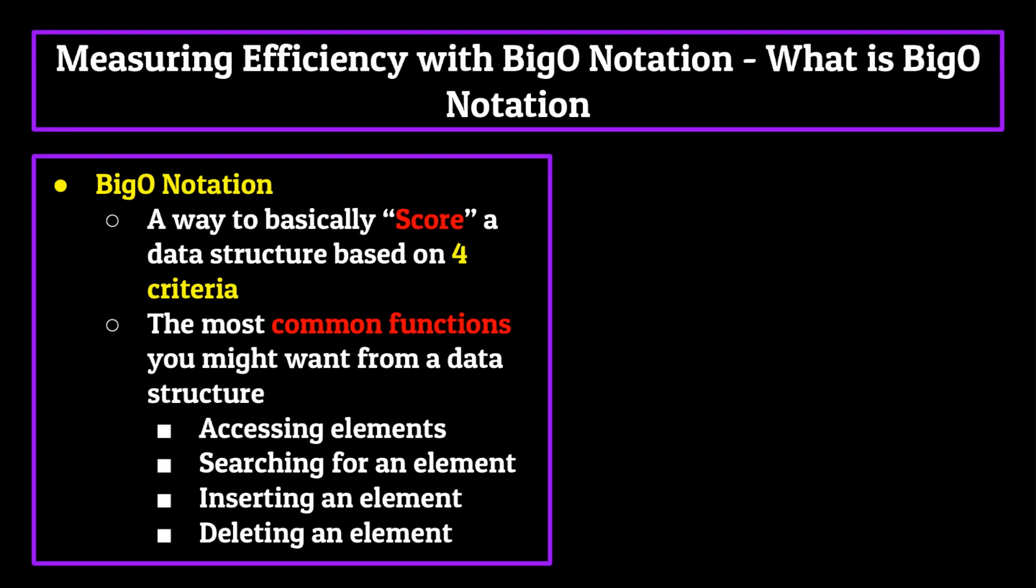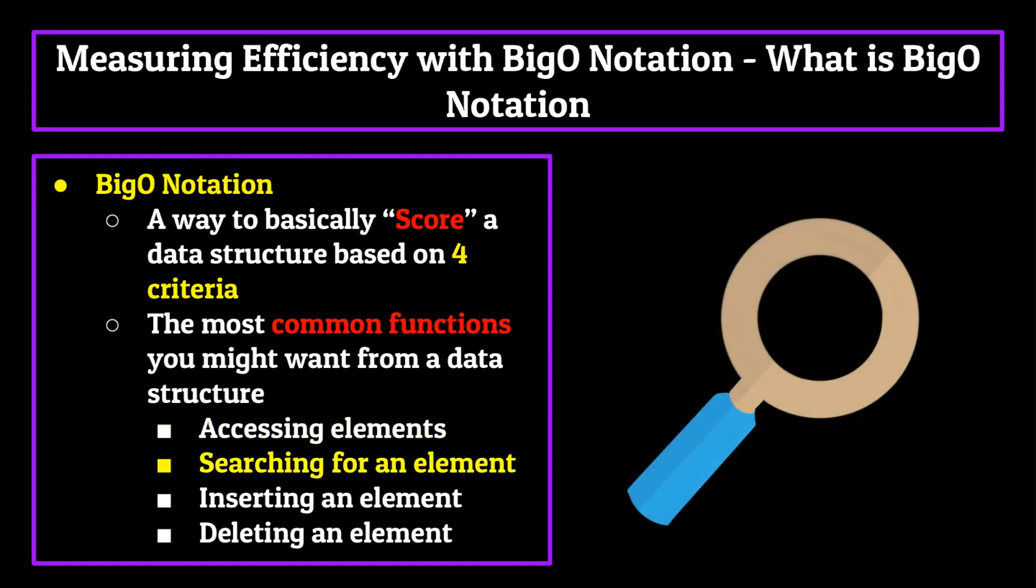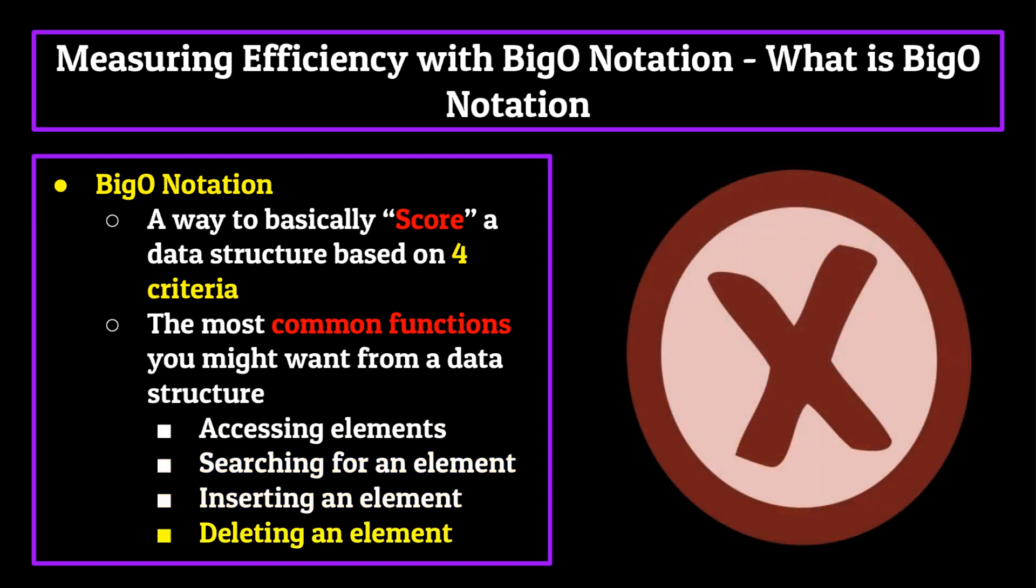Because there are many different ways to store information, programmers have developed this idea of Big O notation as a way to basically score a data structure based on four different criteria. These four criteria are the most common functions you might want from a data structure: the ability to access a specific element within the data structure, search for an element within the data structure, insert an element into the data structure, and delete an element from the data structure.